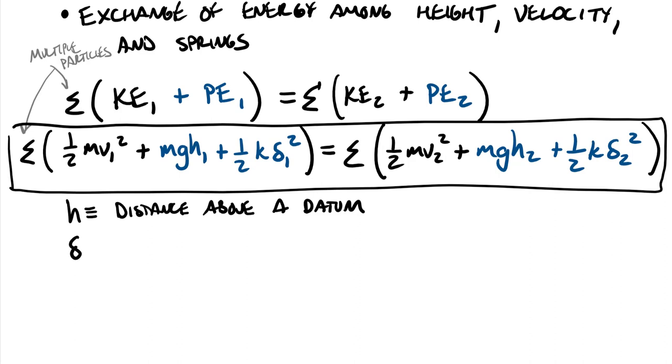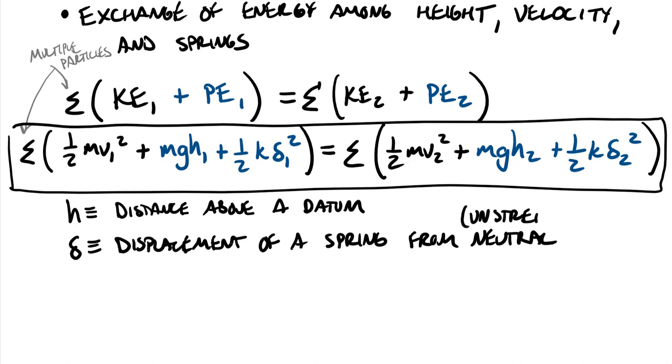Other details here is that the delta is defined as the displacement of a spring from neutral. And another word for neutral is unstretched. Okay unstretched or unloaded just when it's sitting there. And we already put our note there that our summations were for multiple particles.